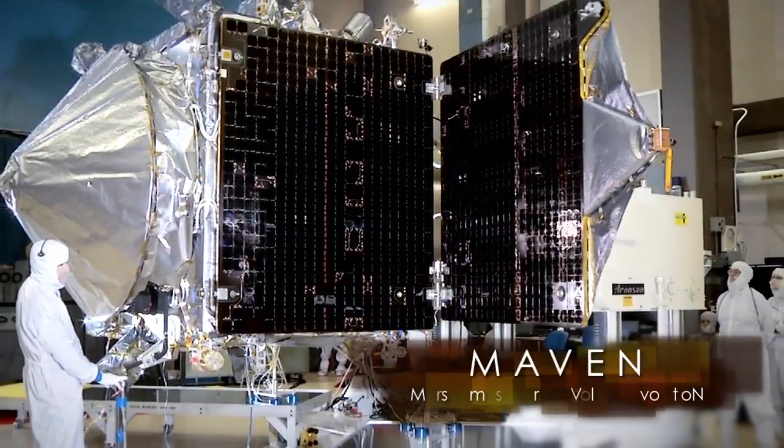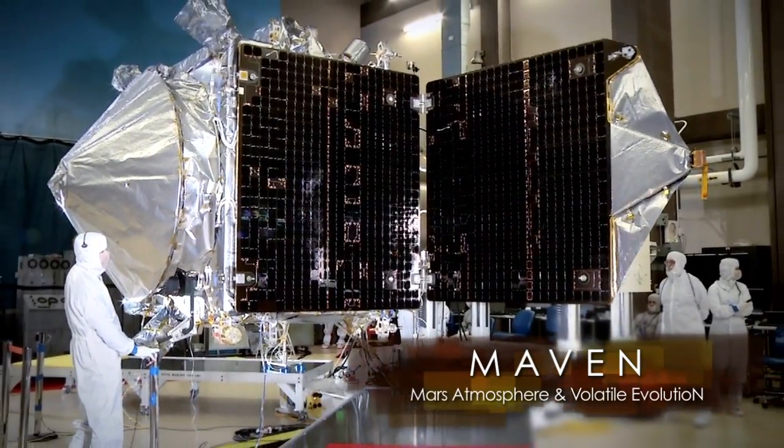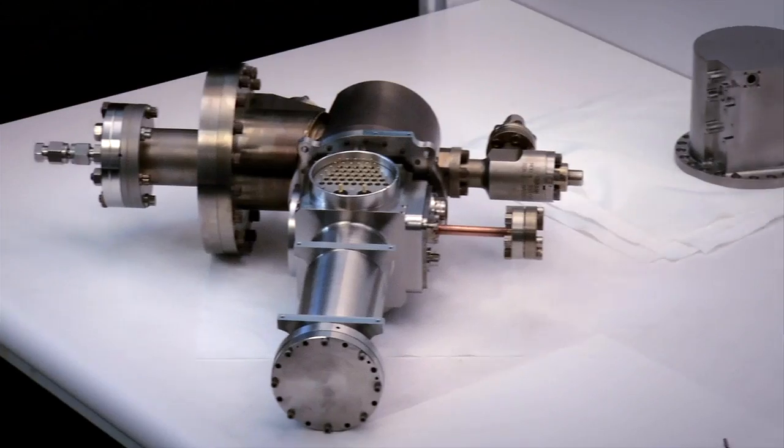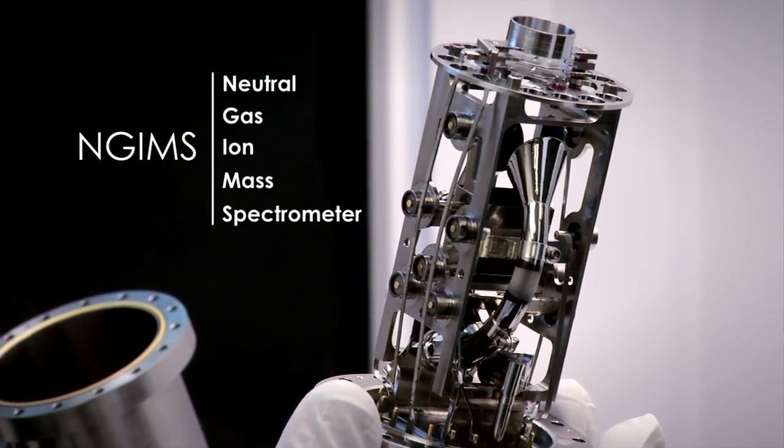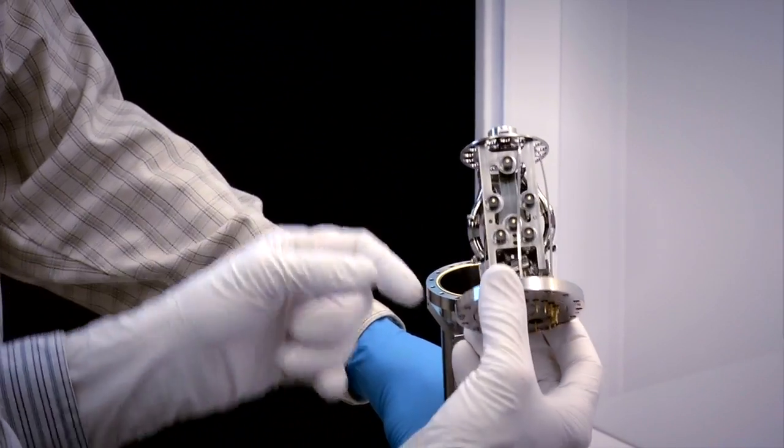MAVEN stands for Mars Atmosphere and Volatile Evolution Mission. The NGIMS experiment on MAVEN is the Neutral Gas and Ion Mass Spectrometer. We have an acronym for everything here at NASA.